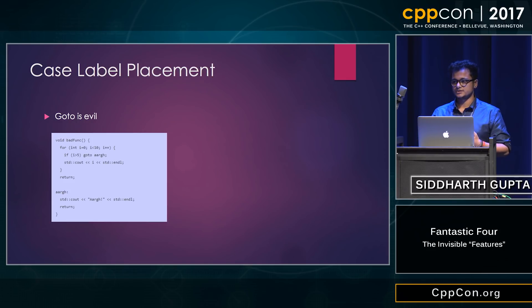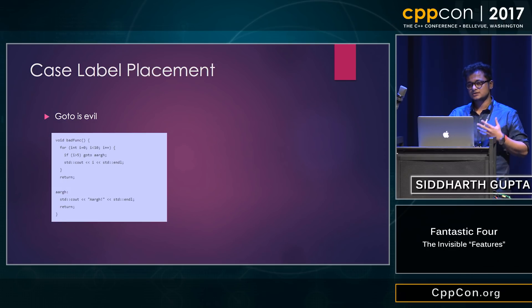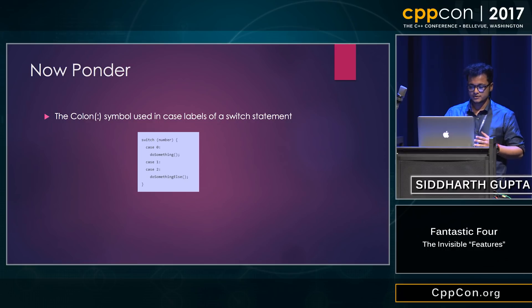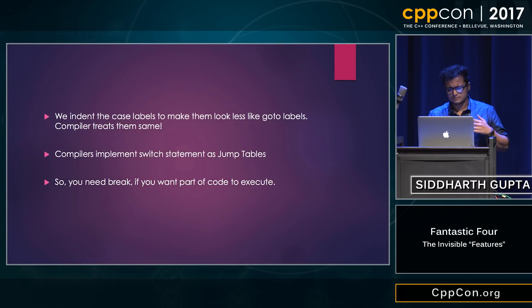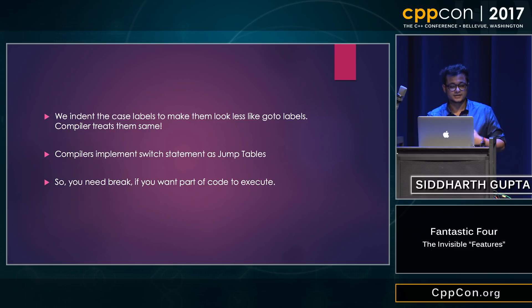We all know the goto statement is something most programmers hate. This example shows the goto statement — C++ still uses it. The goto statement is implemented similarly to a switch statement. The colon symbol used in the switch statement, and the argument of the switch statement, is used to perform whichever case you want. Switch statements have the same implementation as goto statements because they are implemented as jump tables. The argument in the switch statement references the position in the source code you want to execute, and that's the reason you have a break statement — to stop executing the code after that point.